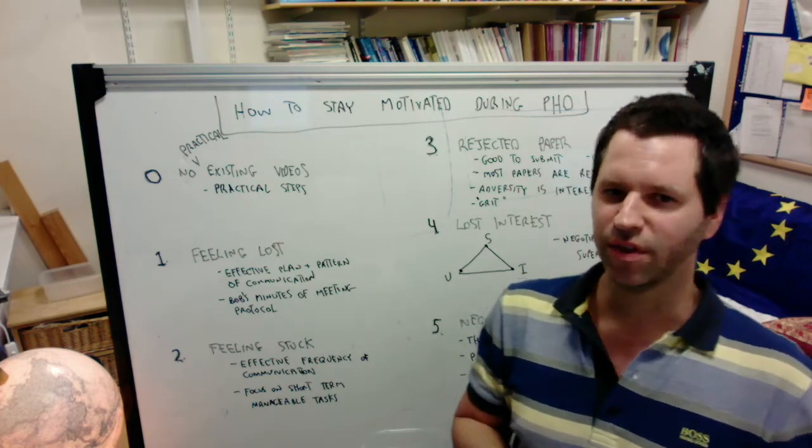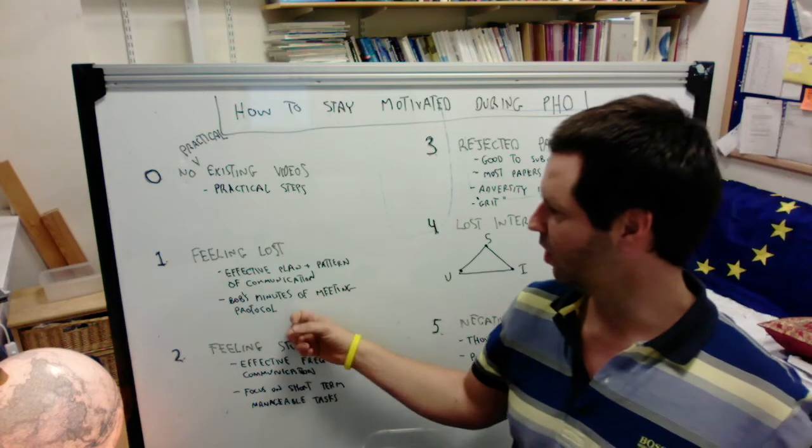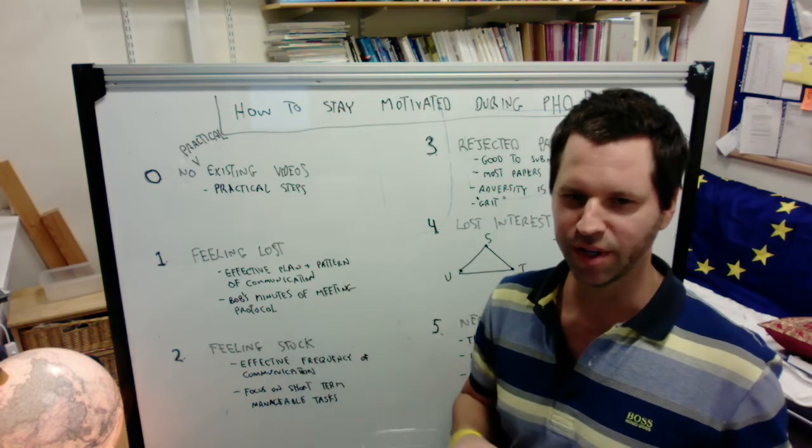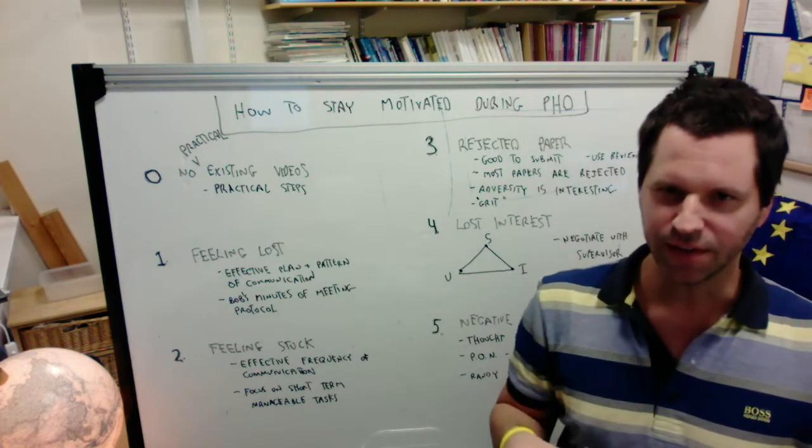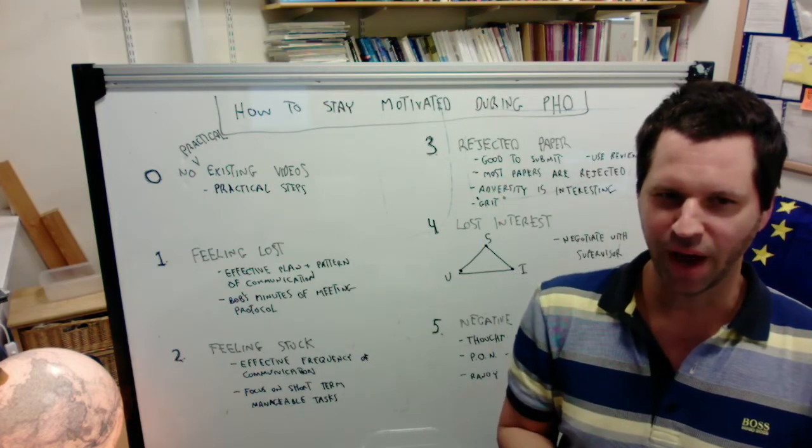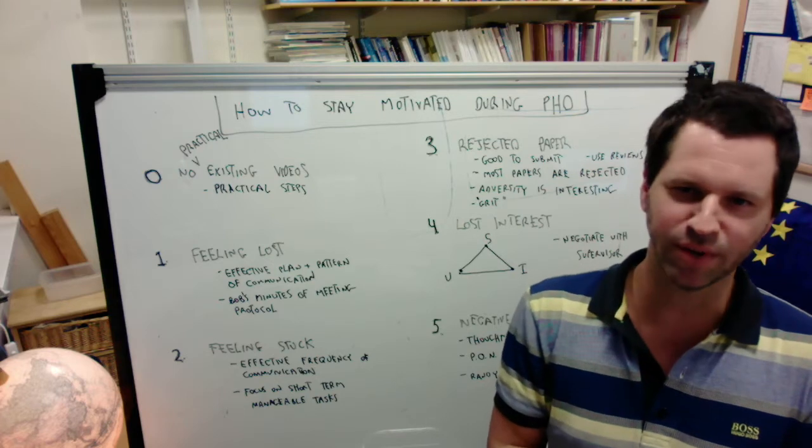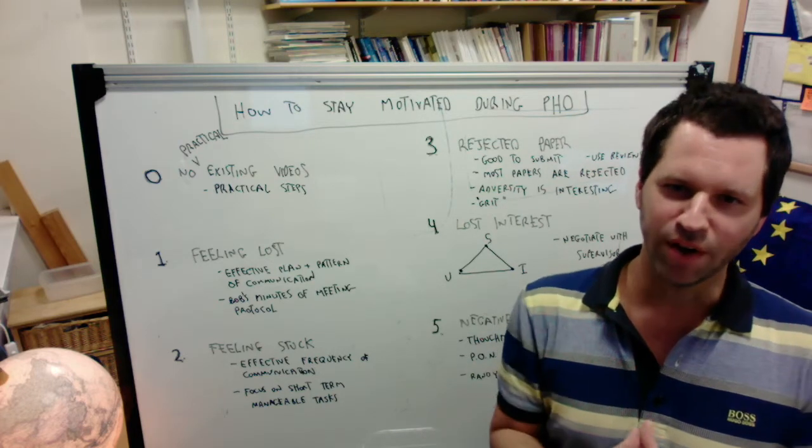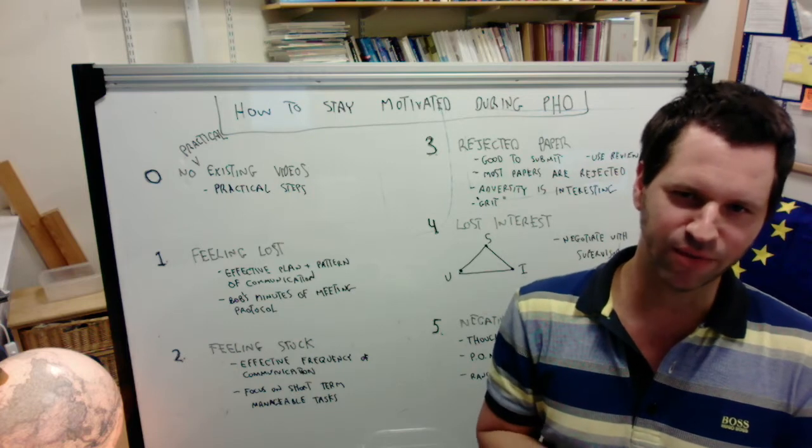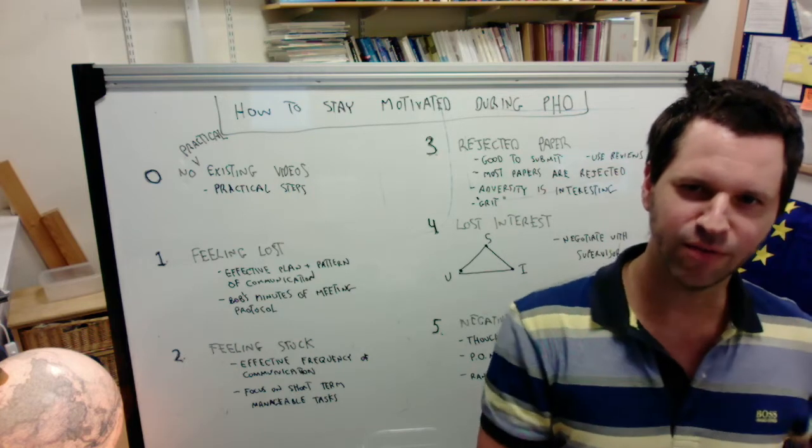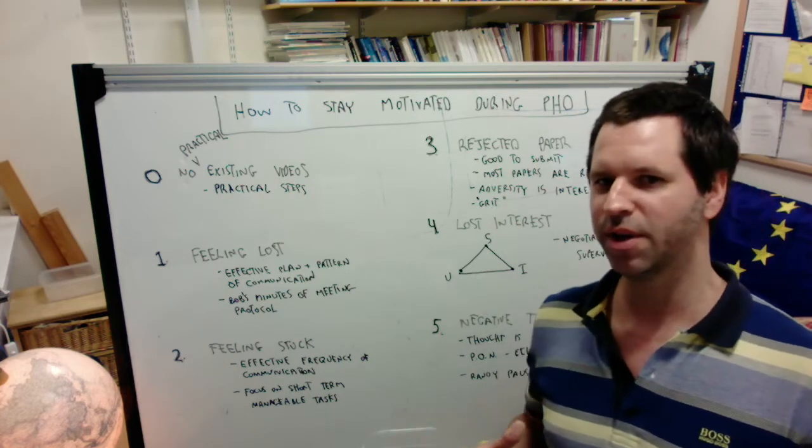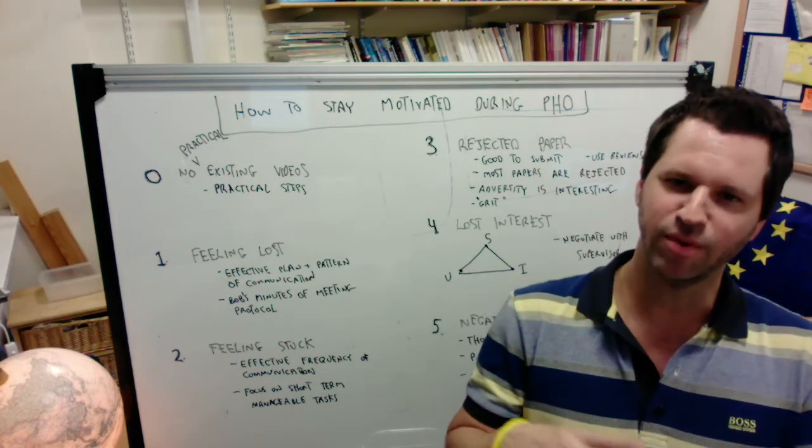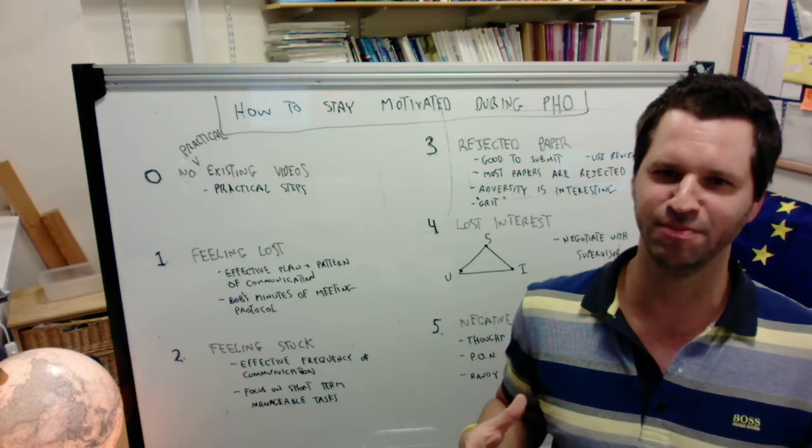That effective pattern of communication is described in something called Bob's Minutes of Meeting Protocol. It's a structured pattern of communication that can take place every time you meet your supervisor. It tells you what information to extract and what information to bring. It's a plan, a structured plan that removes the random chaos from meetings.